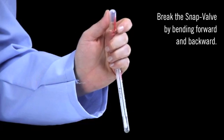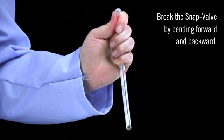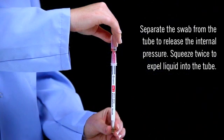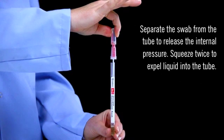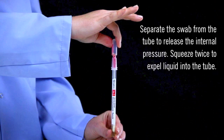Hold the swab tube firmly and use the thumb and forefinger to break the snap valve by bending the bulb forward and backward. Separate the swab from the tube to release the internal pressure and squeeze the bulb twice to expel liquid into the tube. A small amount of enrichment media will stay in the bulb. This is okay.